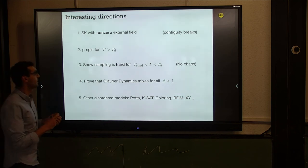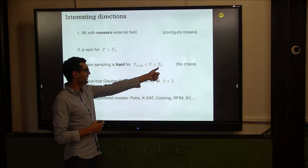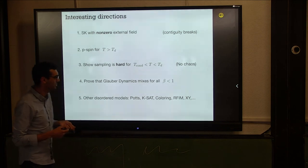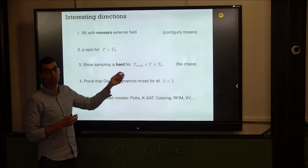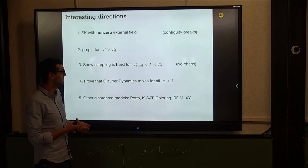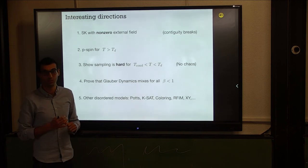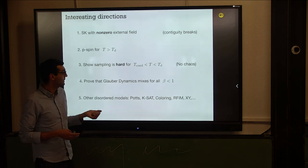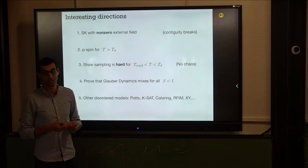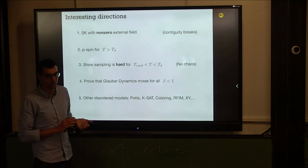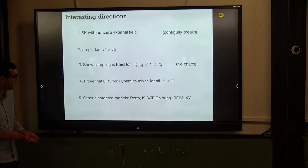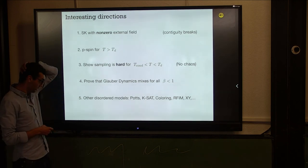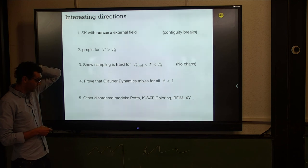Between condensation and the dynamical transition, it is not believed that efficient sampling is possible. Can you show a lower bound against stable algorithms in this regime? This is interesting because there's no chaos here — it's still a high temperature regime. So you need a different mechanism to explain why sampling is hard. Also open: does Glauber dynamics mix for all beta smaller than one?